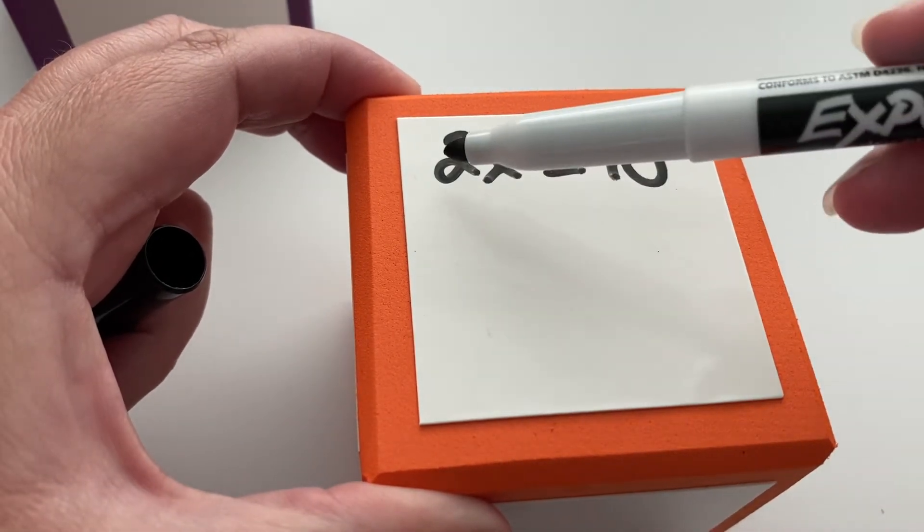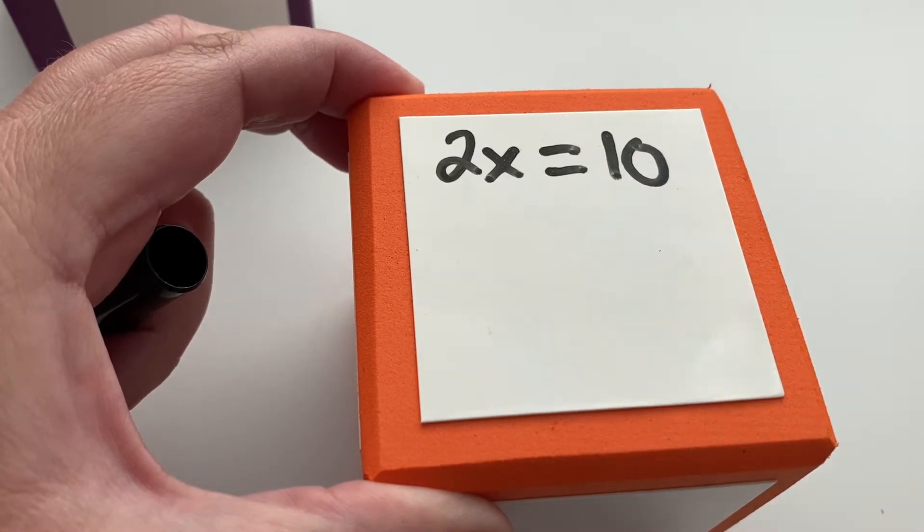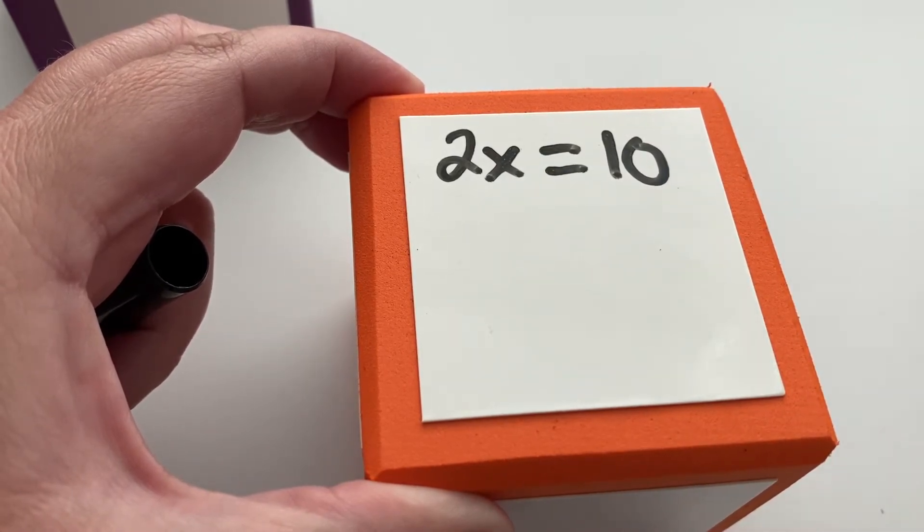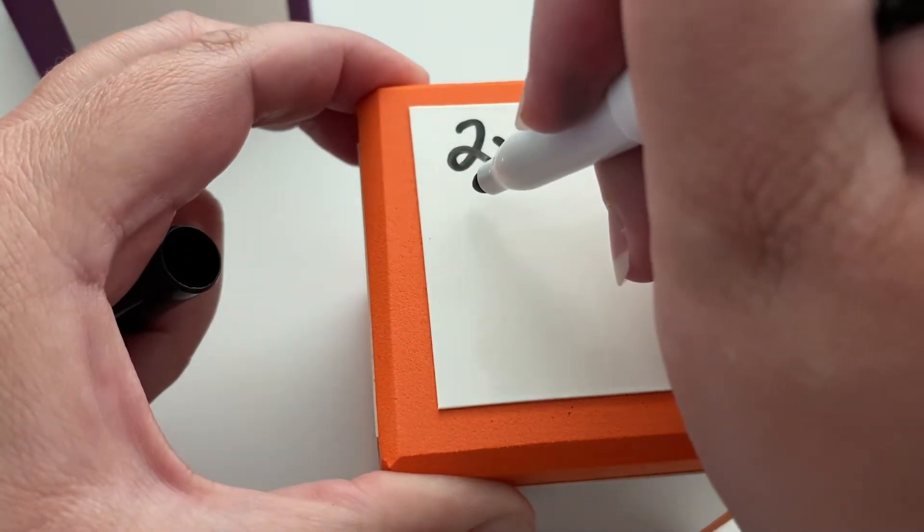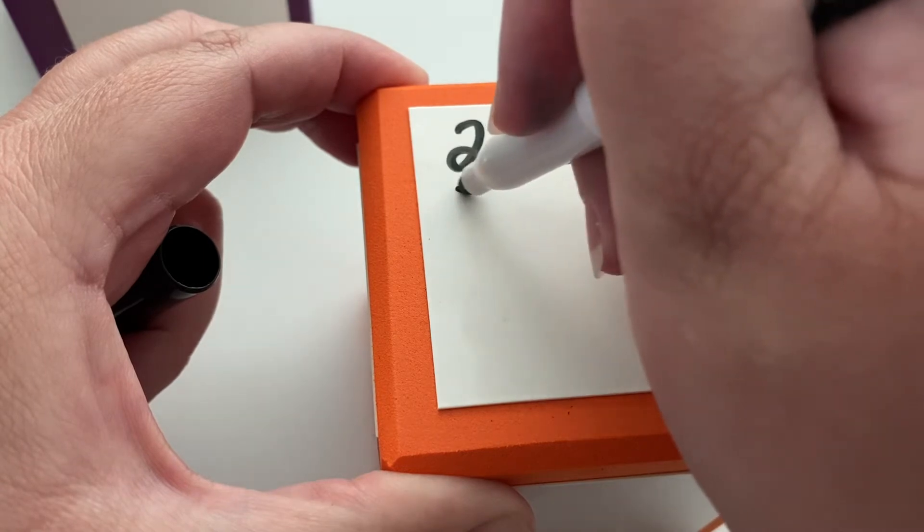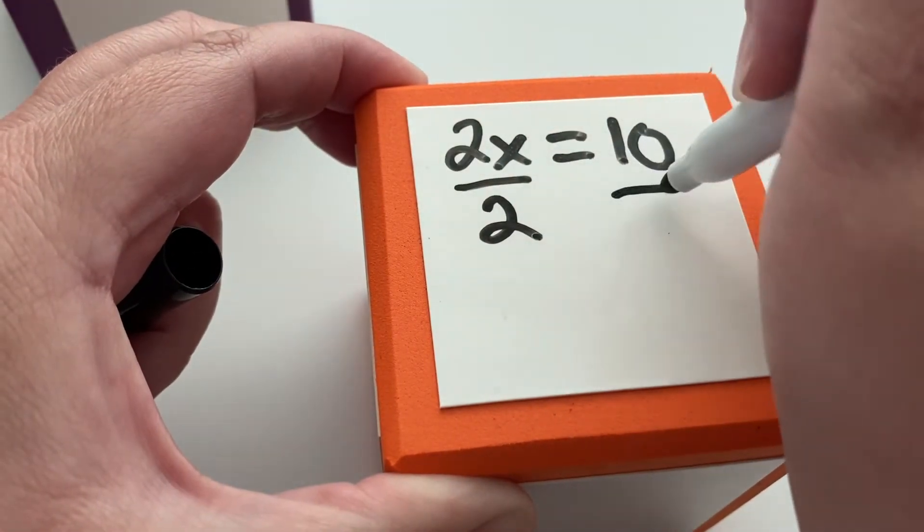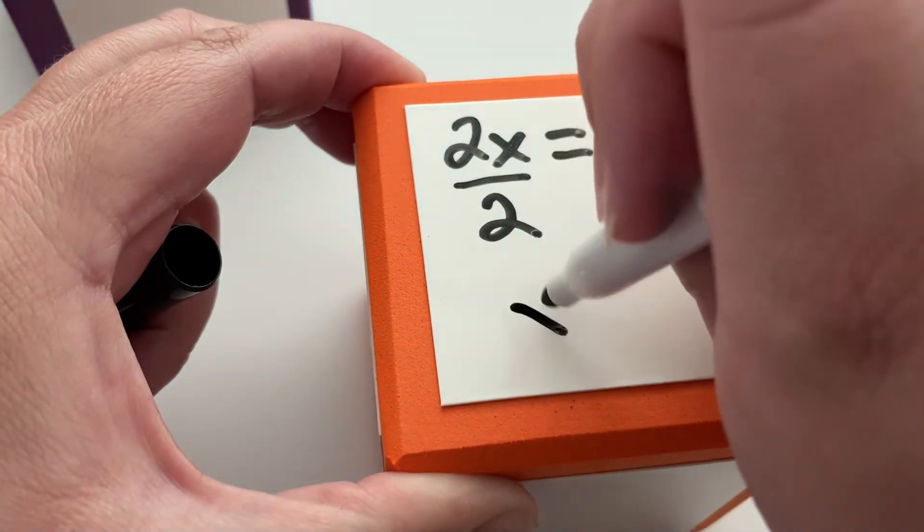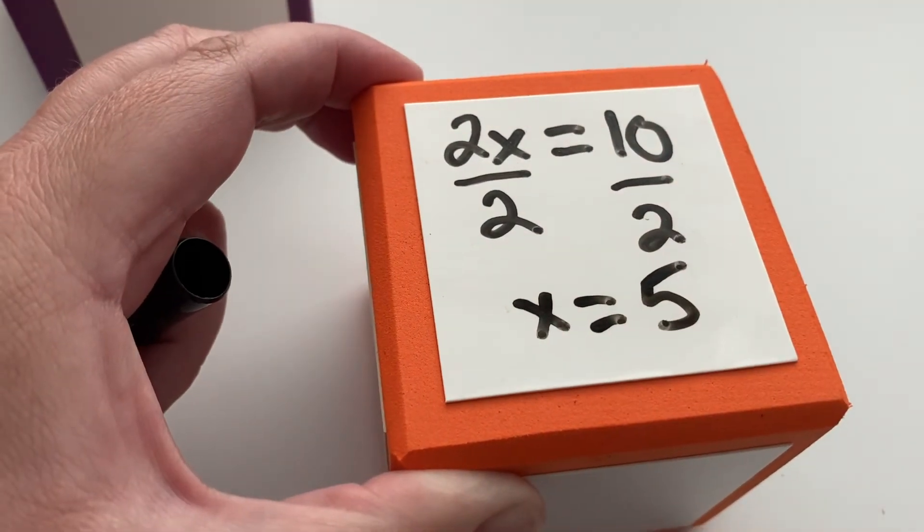This literally says 2 times something equals 10. Both sides are equal. They're both equal to 10—just different ways of making 10. So the inverse operation of this multiplying we said was dividing. So we're going to divide by 2, and we have to do that on both sides. And we get x equals 5 because 10 divided by 2 is 5.